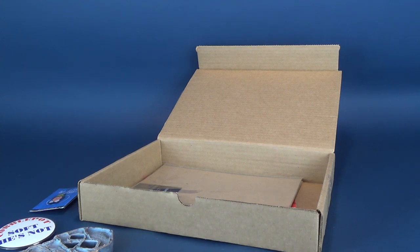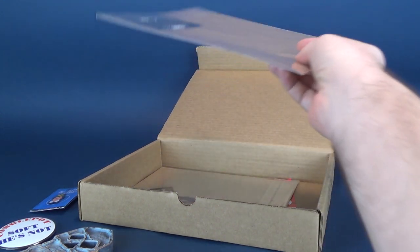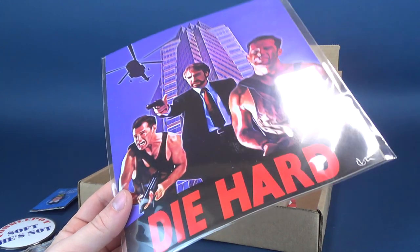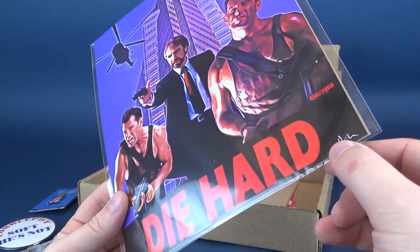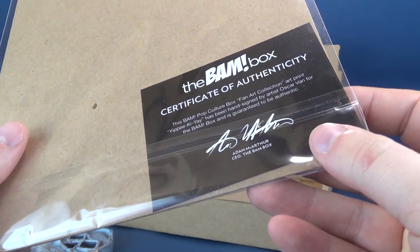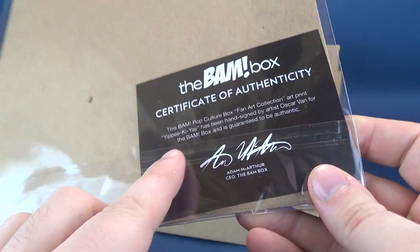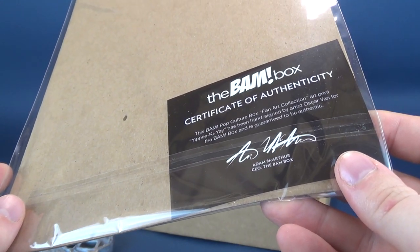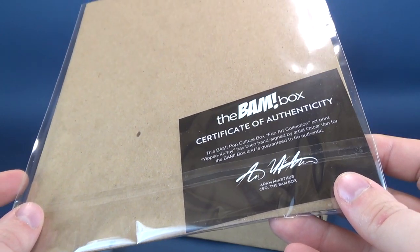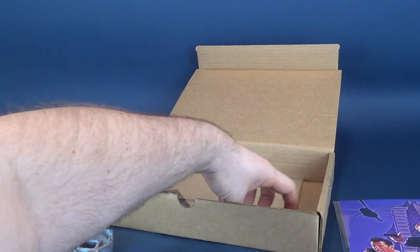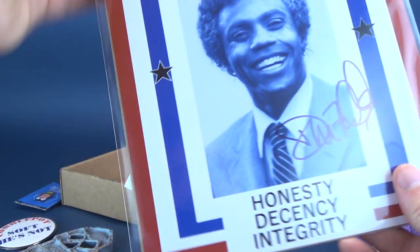Still drawing a blank about that elf. Feel so bad that I can't remember his name. The first autographed print, speaking of Die Hard, shoot the glass, we have a Die Hard print. It has been autographed by the artist. It is out of 2,000 copies, this happens to be 456. The terrorist I kill with feet smaller than my sister. The BAM pop culture box fan art collection art print, yippee-ki-yay, has been hand signed by artist Oscar Van for the BAM box and is guaranteed to be authentic. Very nice.